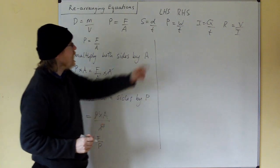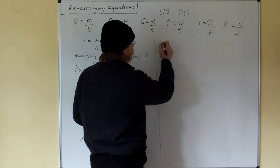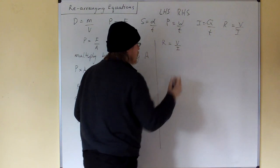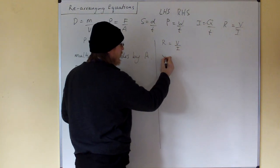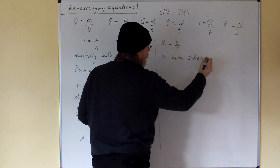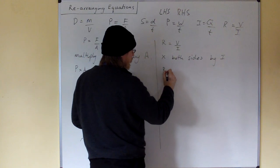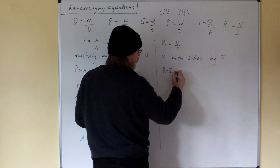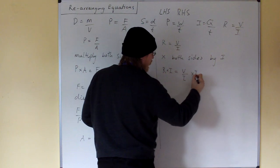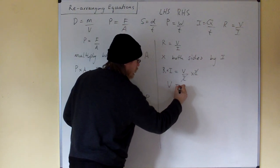Let's choose resistance equals voltage over current. Right. Multiply both sides by I. So we get resistance times I equals voltage over I times I. The I's cancel, and we get V equals IR.